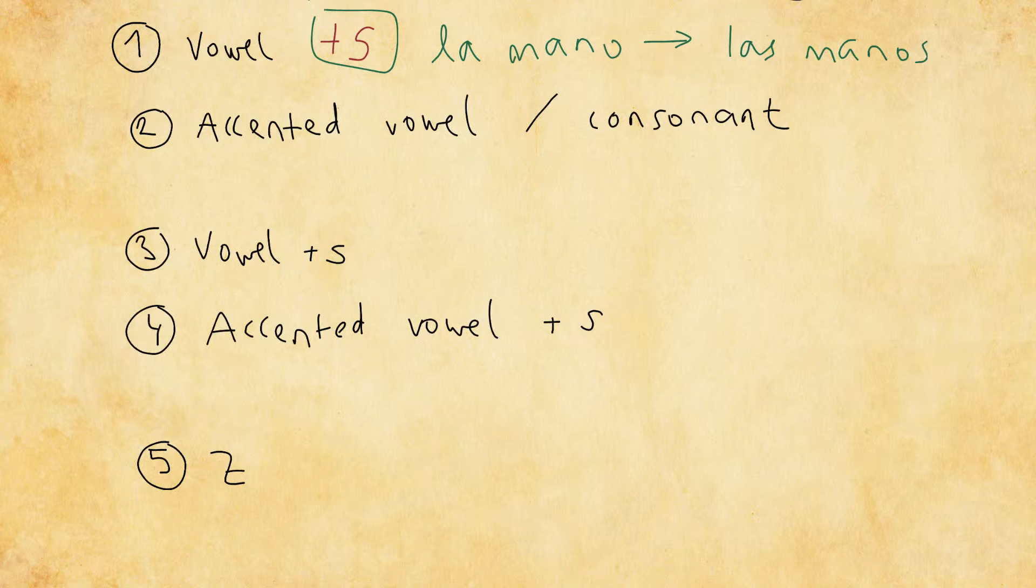However, you can also have a word that ends either with an accented vowel or a consonant. And in that case, you add es to the end. For example,